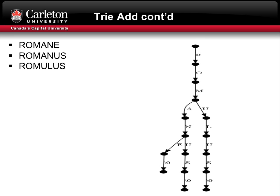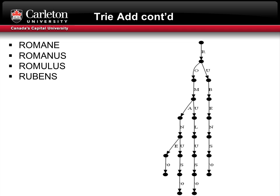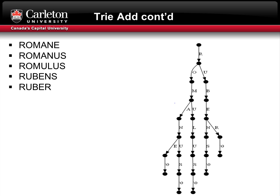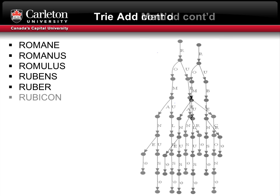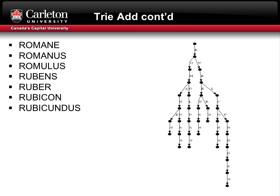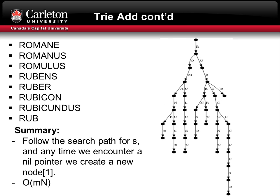We do the same steps for romulus — we branch off after the m: u-l-u-s, null terminator. We also do the same for rubens after the r: u-b-e-n-s, null terminator. We do the same for ruber, rubicon, and rubicundus. Lastly, we add the word rub. You notice that rub was already in the trie. The only addition was the null terminator, indicating that rub is a word.